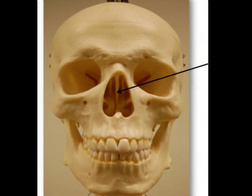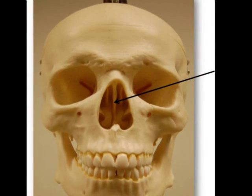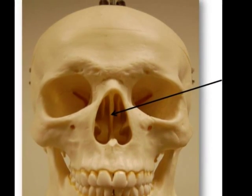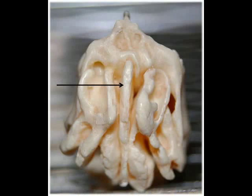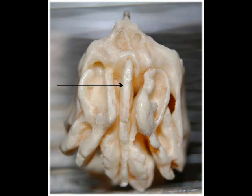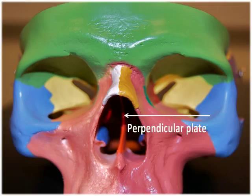Projecting in the opposite direction from the crista galli is an inferior bony plate called the perpendicular plate. This is a thin, flat bone that forms the superior nasal septum.